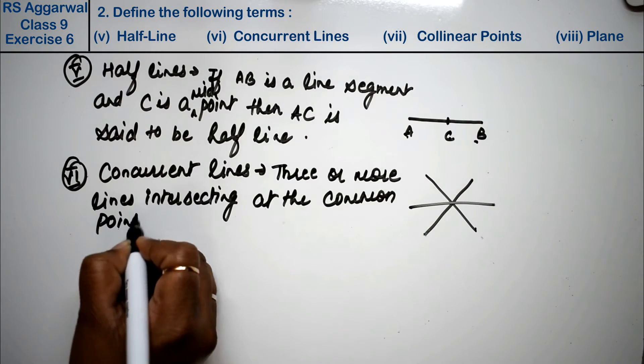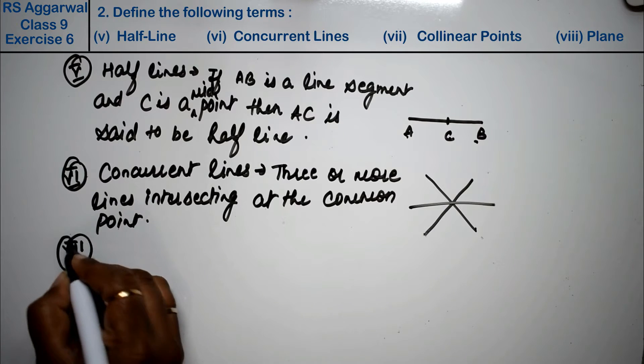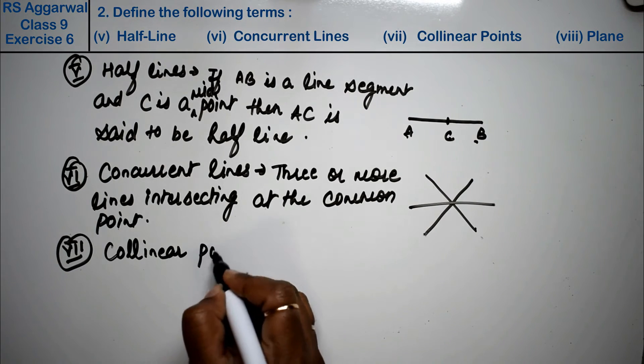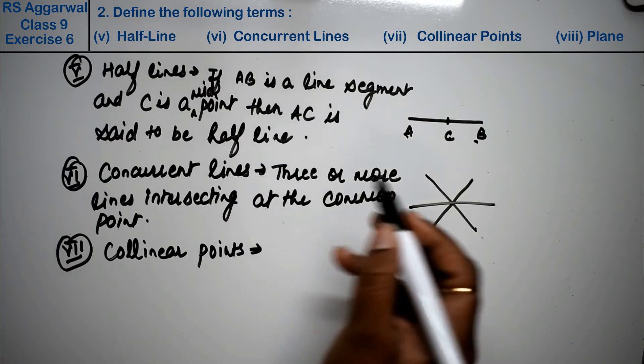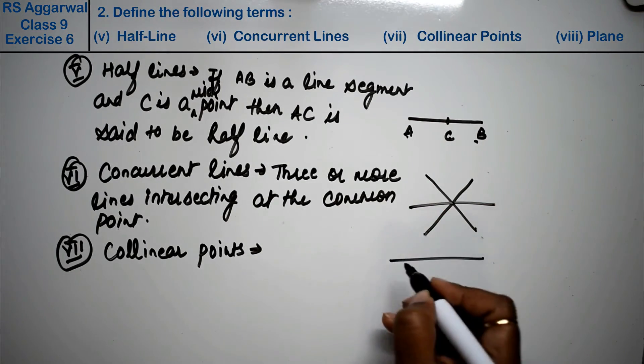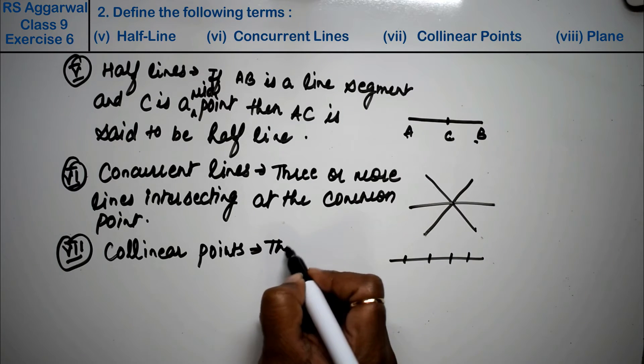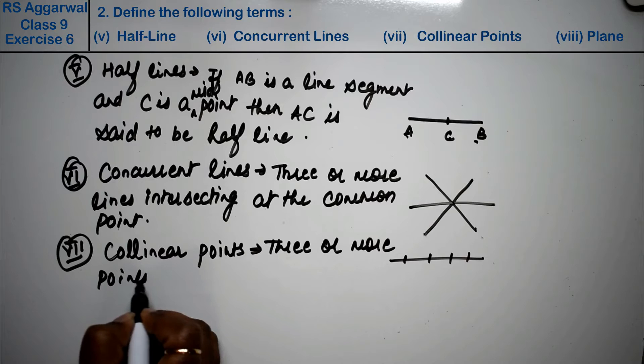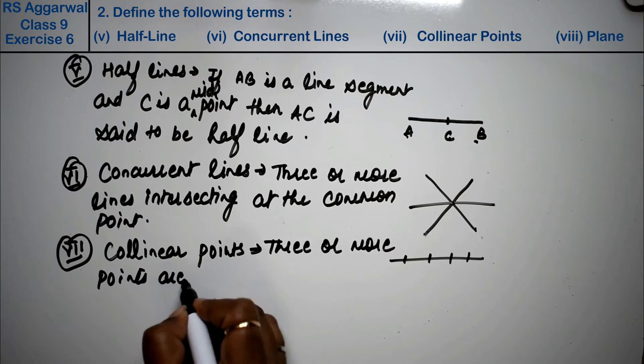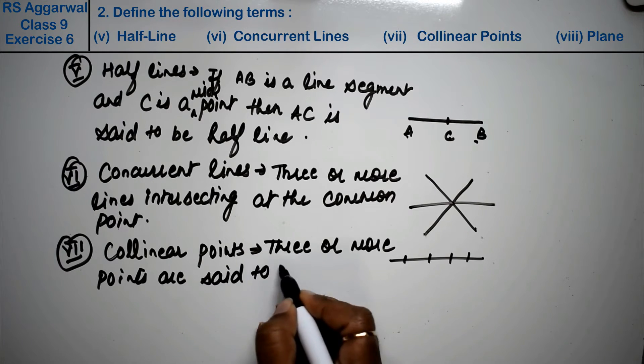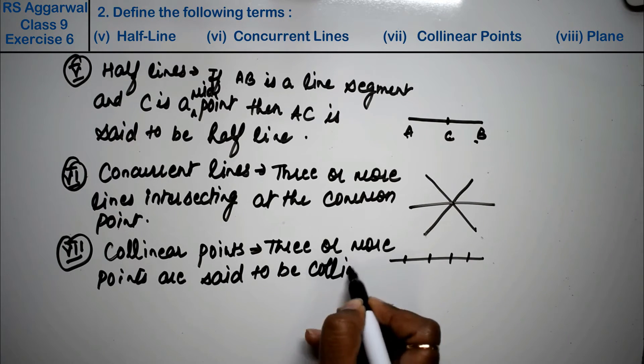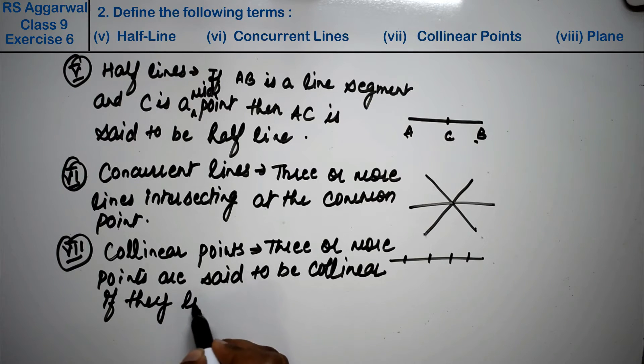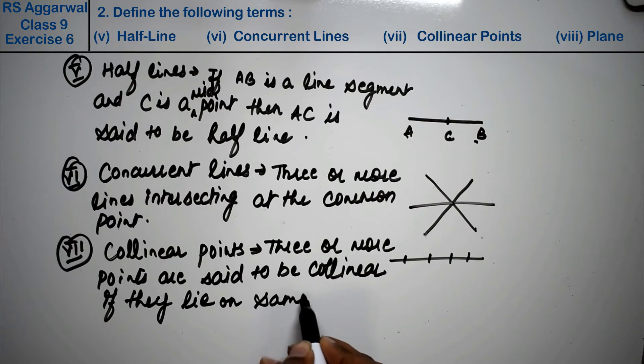Let's do seventh part. Seventh part is collinear points. Collinear points kya hoti hain? Ek hi line mein ek hi point pe hote hai collinear points hote hai. Ek hi line mein teen ya teen se zyada points. Three or more points are said to be collinear if they lie on same line.